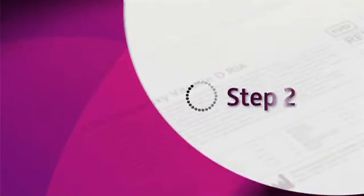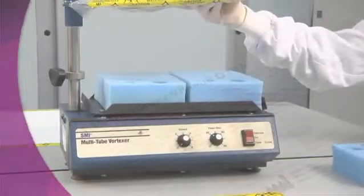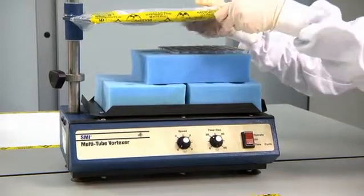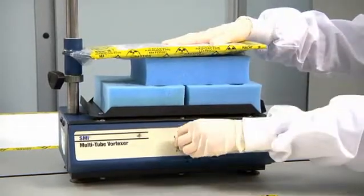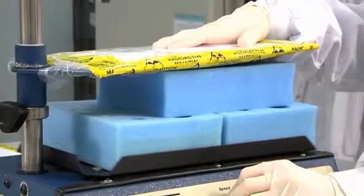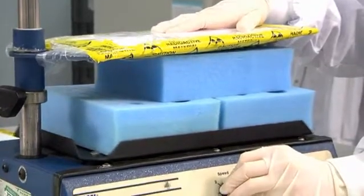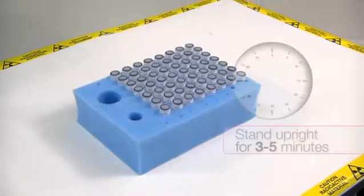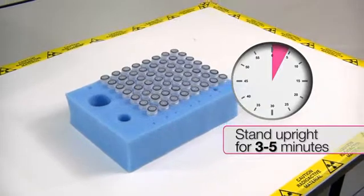Step 2: Vortex immunocapsules and allow the solid phase to settle. Stand immunocapsules upright in the foam rack for 3 to 5 minutes.